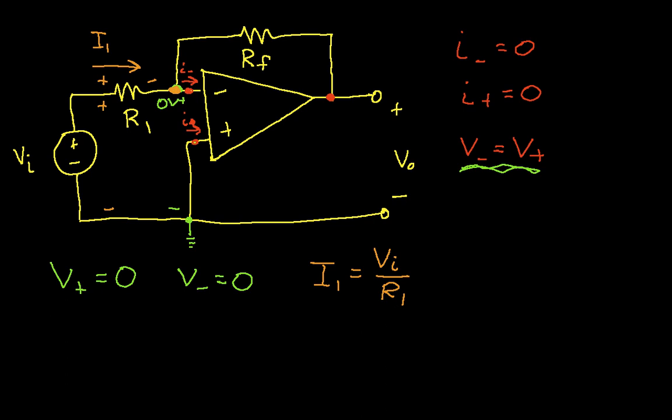Let's see if we can figure out IF. This is the current component through RF. So again, I1 is equal to V minus is equal to V plus, V plus is 0. The voltage at this point is V0. So IF is equal to V out over RF. Now we're almost done. We almost have everything we need to get the relationship between the input voltage and the output voltage.